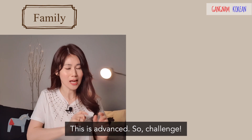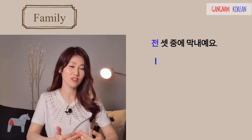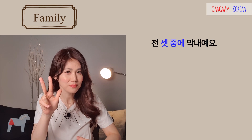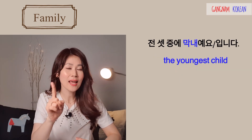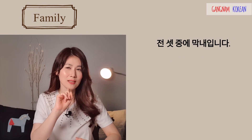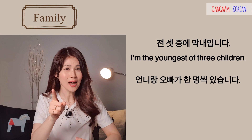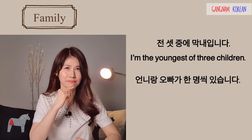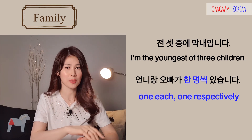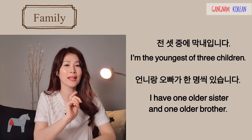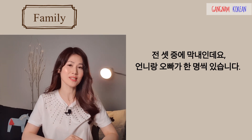Here's an advanced challenge: 전 셋 중에 막내에요. 언니랑 오빠가 한 명씩 있습니다. 셋 means 'three', 중에 means 'among', and 막내 means 'the youngest child'. So 전 셋 중에 막내입니다 — I'm the youngest of three children. 언니 means an older sister and 오빠 means an older brother. 한 명씩 means 'one respectively'. So: I have one older sister and one older brother. 전 셋 중에 막내인데요. 언니랑 오빠가 한 명씩 있습니다.